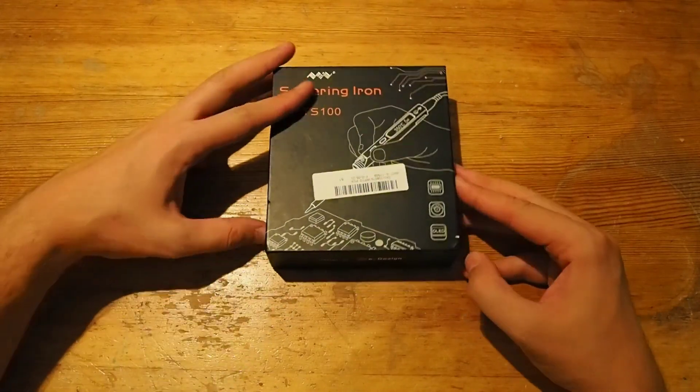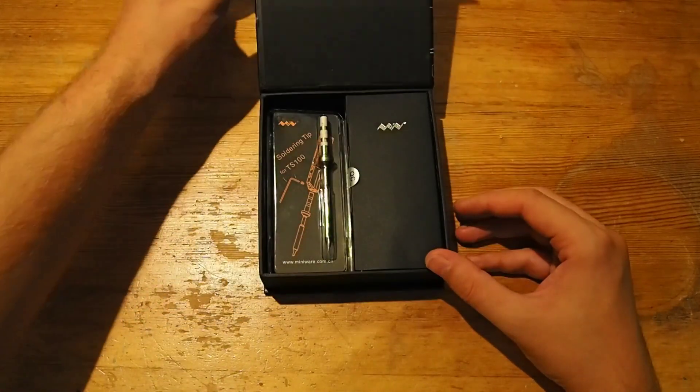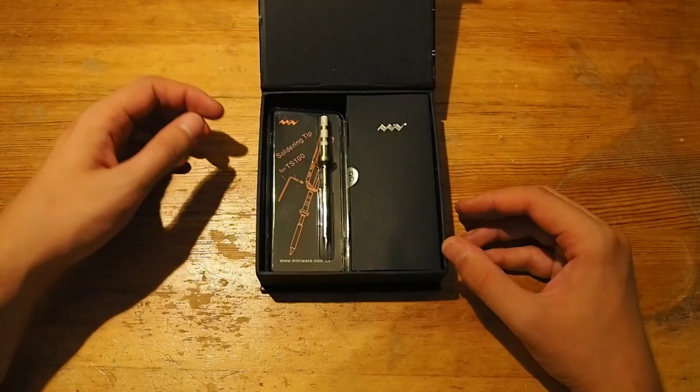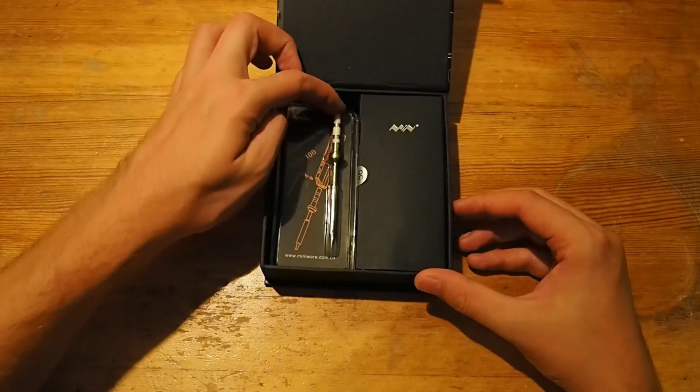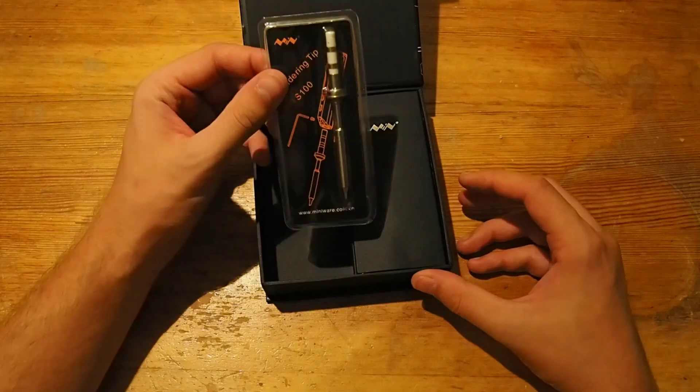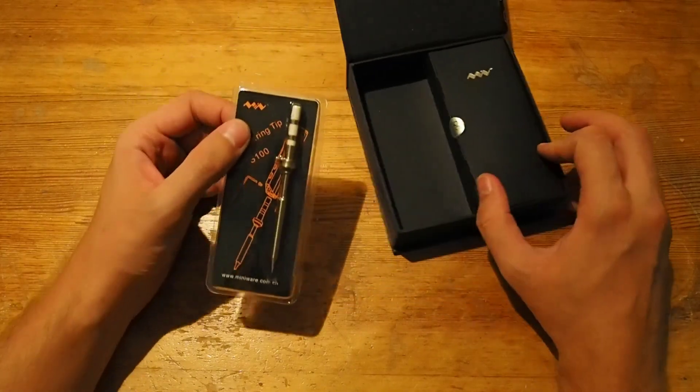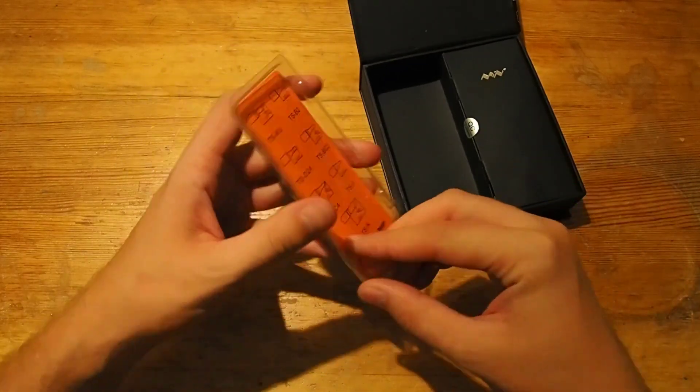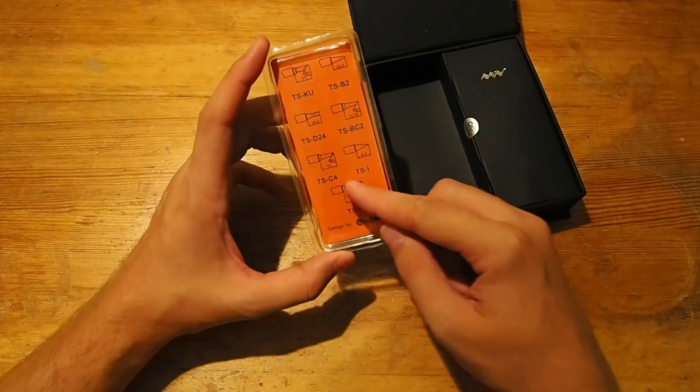The box is held with magnet and you just open it. Here directly we see one of the first differences. This one comes with a different soldering tip than the original one. This one comes with the TSI one.